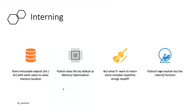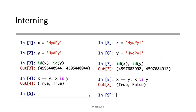This is called interning. Python points immutable objects — like integers or strings — to the same object in memory. When you first created 'x equals 10', Python interns it and knows an object with value 10 already exists, so when you create y it assigns the same reference rather than a new object. Python does this by default as a memory optimization. You can also do it manually using the sys module's 'sys.intern()' function on strings.